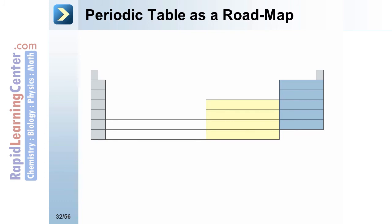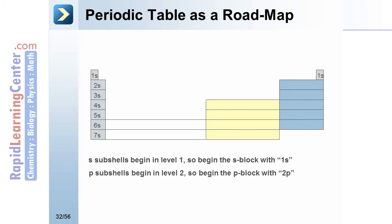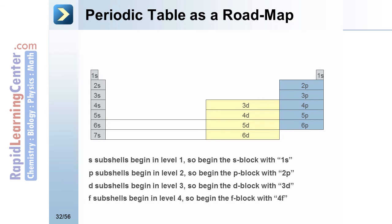The s block begins with level 1. Begin labeling this section with 1s. The p block begins in level 2. Begin labeling this block with 2p. The d subshell begins in level 3. This block is labeled with 3d. And finally, the f subshells begin in level 4.